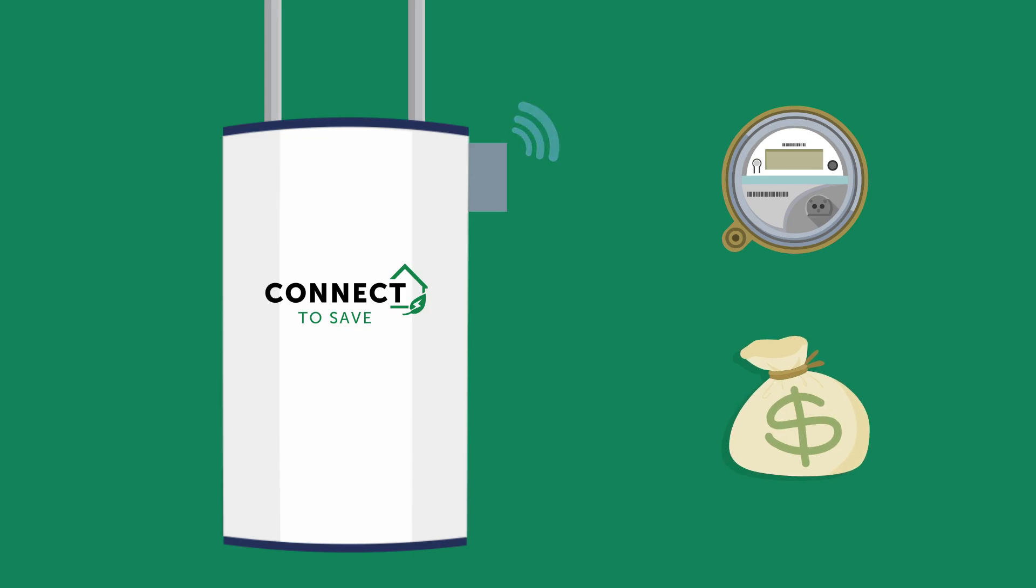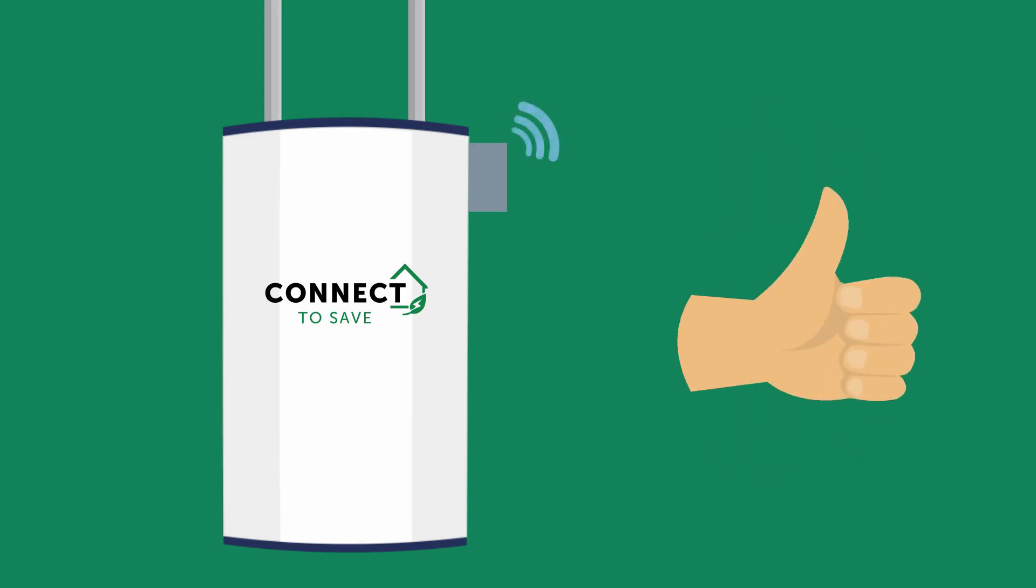Connect2Save turns your water heater into a smart device, optimizing the water heater so that it works hardest when energy demand and costs are low for your cooperative. This results in cost savings for the entire cooperative membership. Let's see how it works.